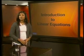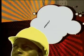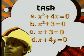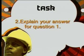Now it's time for you to see if you can apply what you have learned in this lesson. Number one: which of the following equations are linear? A. x squared plus 4x equals zero. B. x squared plus 3 equals zero. C. x plus 3 equals zero. D. x plus 4y equals zero. Number two: explain your answer for question one.